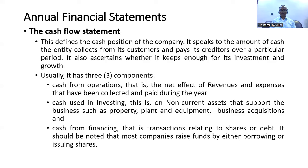The cash flow statement usually has three components: cash from operations, cash used in investing, and cash from financing. Cash from operations refers to the net effect of revenues and expenses collected or paid during the year. Cash used for investing covers non-current assets such as property, plant, equipment, and business acquisitions. Cash from financing covers transactions relating to shares or debt, since companies are often funded by borrowing or issuing shares.